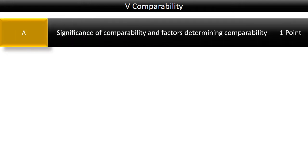The first chapter, dealing with the significance of comparability and comparability factors, is actually something we've discussed already when dealing with functional analysis in Chapter 2, so we're not going to spend a lot of time on that. I would highly recommend that you go and look at the gold and green chart we had of the functional analysis, explaining all the steps, because in the introduction to that, it also explains why we are doing this.